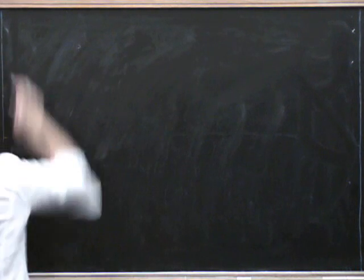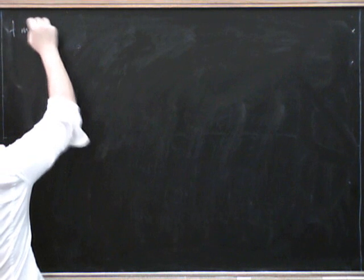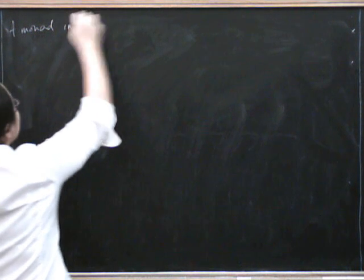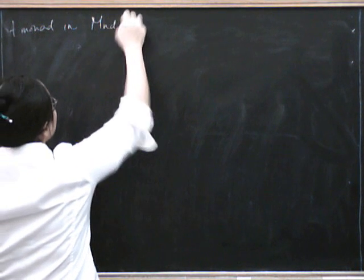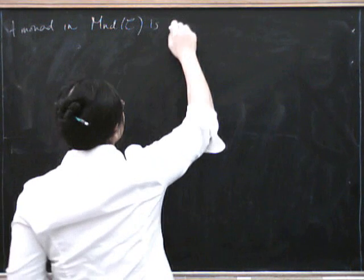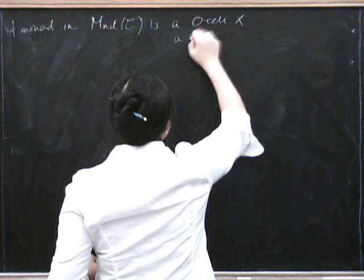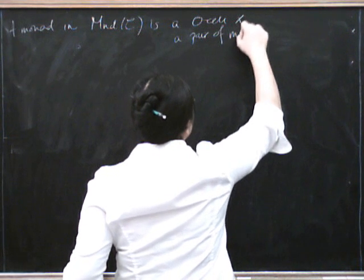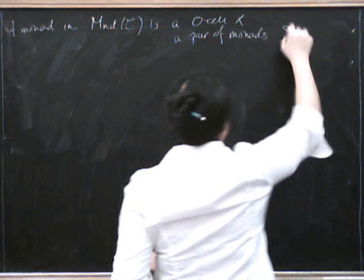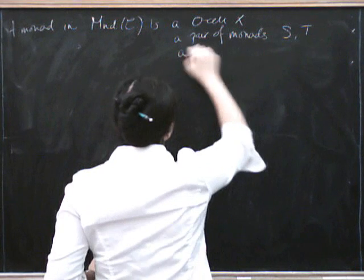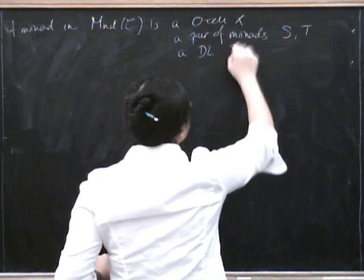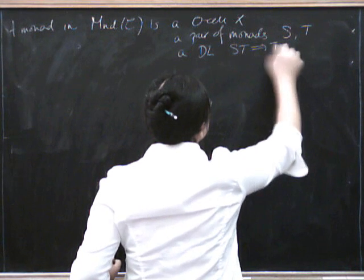So, a monad in monads in C is a zero cell X, a pair of monads S and T on X, and a distributive law of S over T.